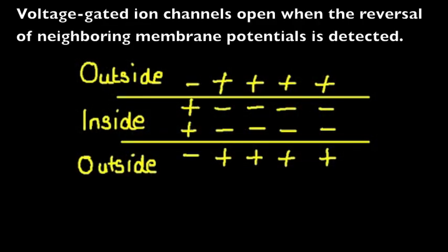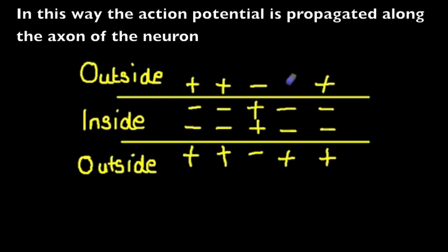In terms of how this action potential moves down the axon, the voltage-gated ion channels for potassium and sodium open when they detect a reversal in the membrane potential near them.